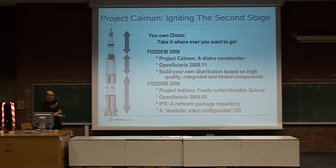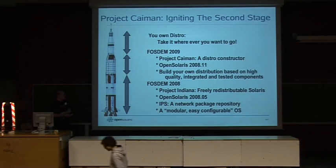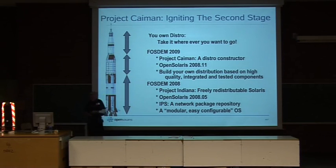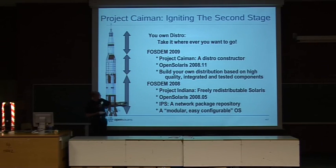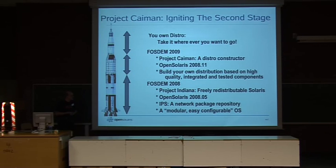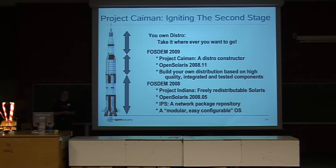Thank you for having me here again this year. Last year I spoke about our about-to-be-released OpenSolaris 2008. We released it last April, and the important thing was that it was the first time we had a fully redistributable Solaris, which was very modular and based on IPS — our packaging repository sitting on the web, very similar to the technology you get with Debian. This was a precondition for Project Kaiman, because we needed a modular operating system you can store easily in the pieces you need.